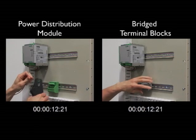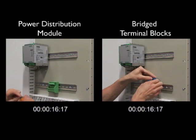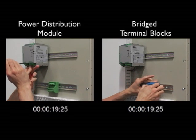The installer on the left begins by placing a single power distribution module on the DIN rail and quickly begins preparing wire to run between the power supply and the power distribution module.